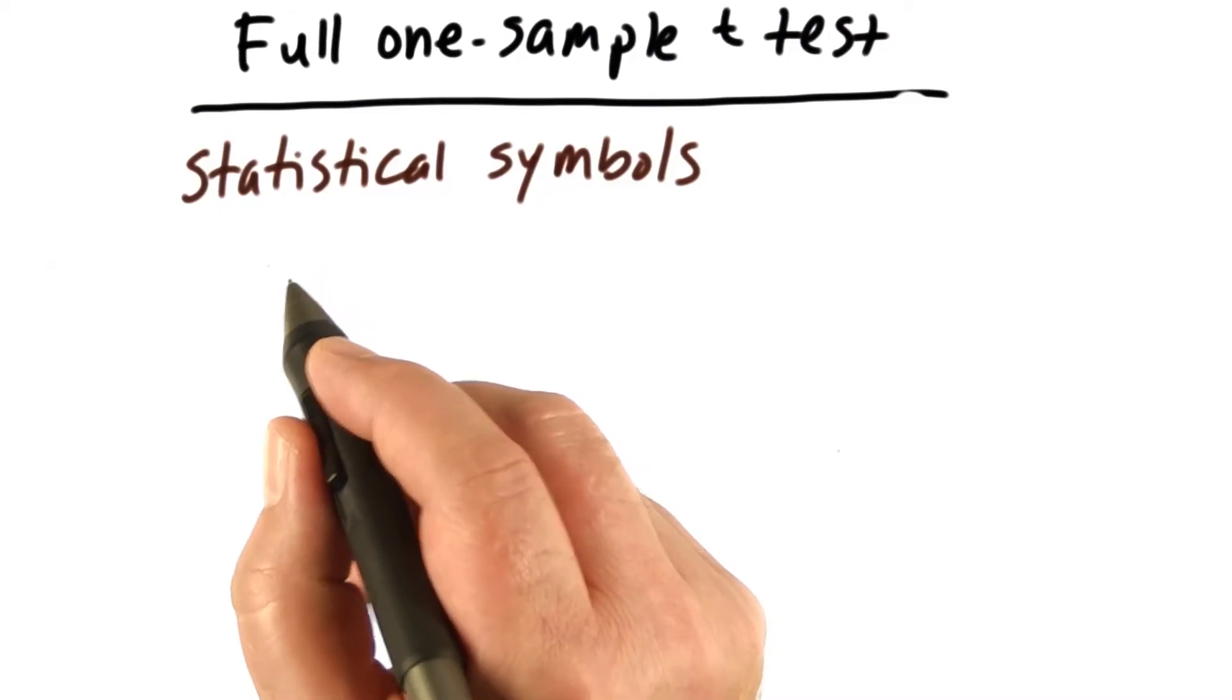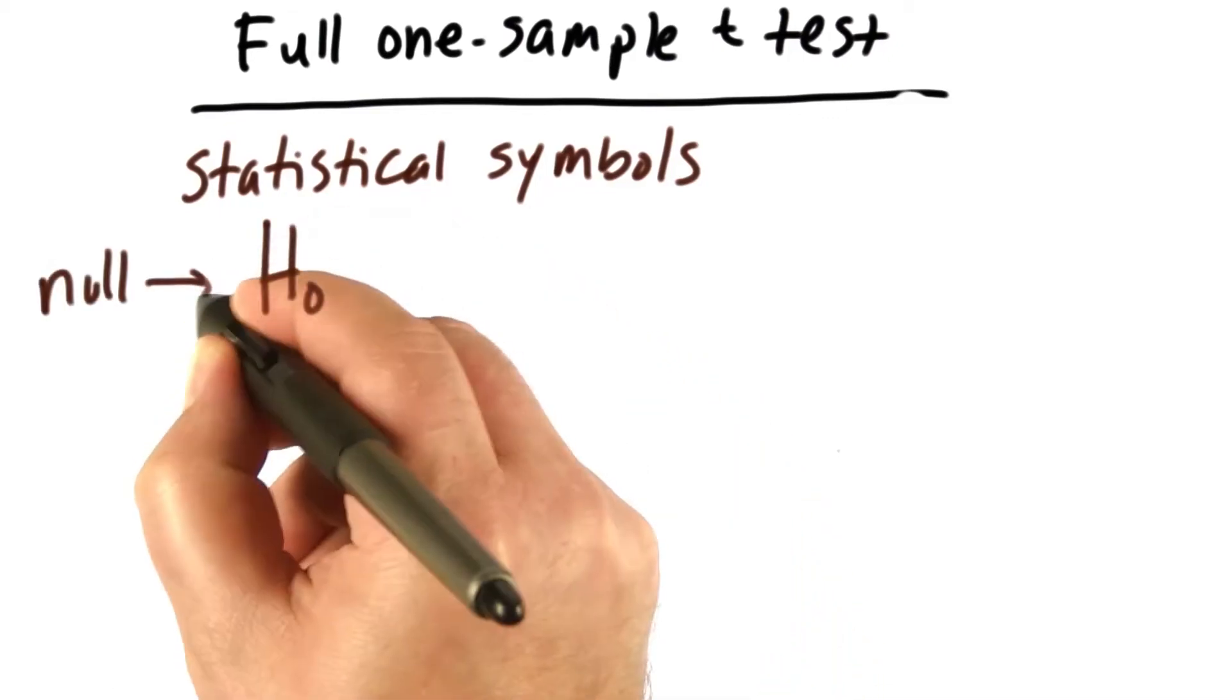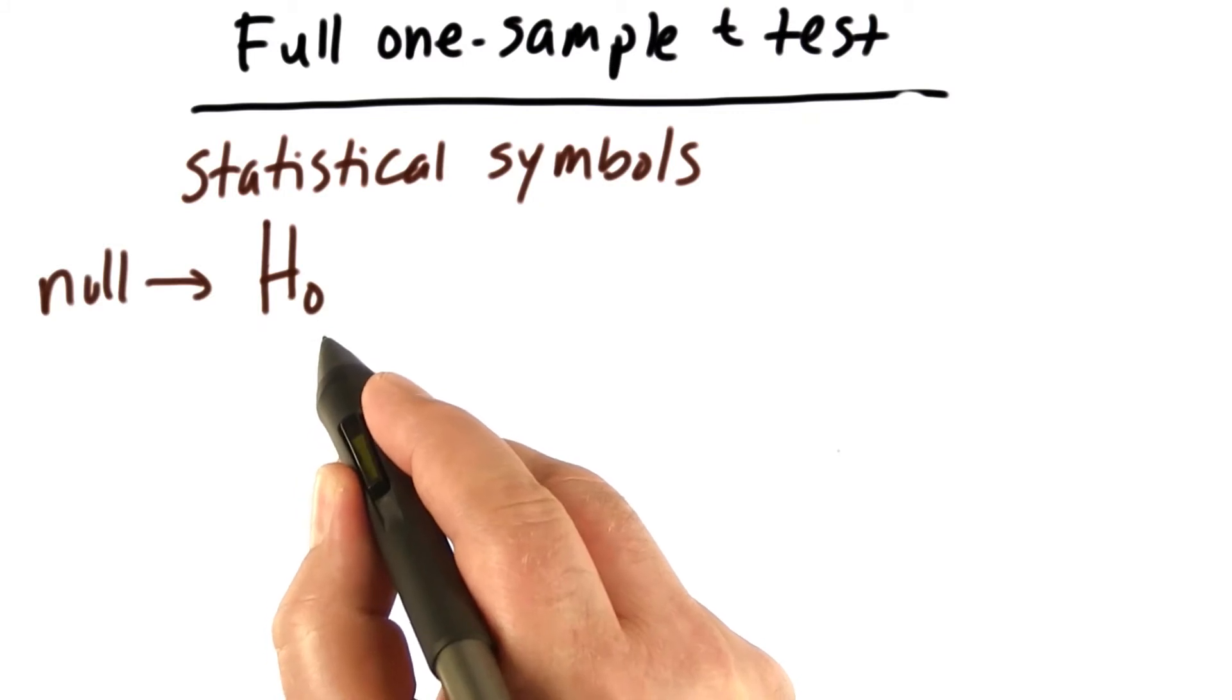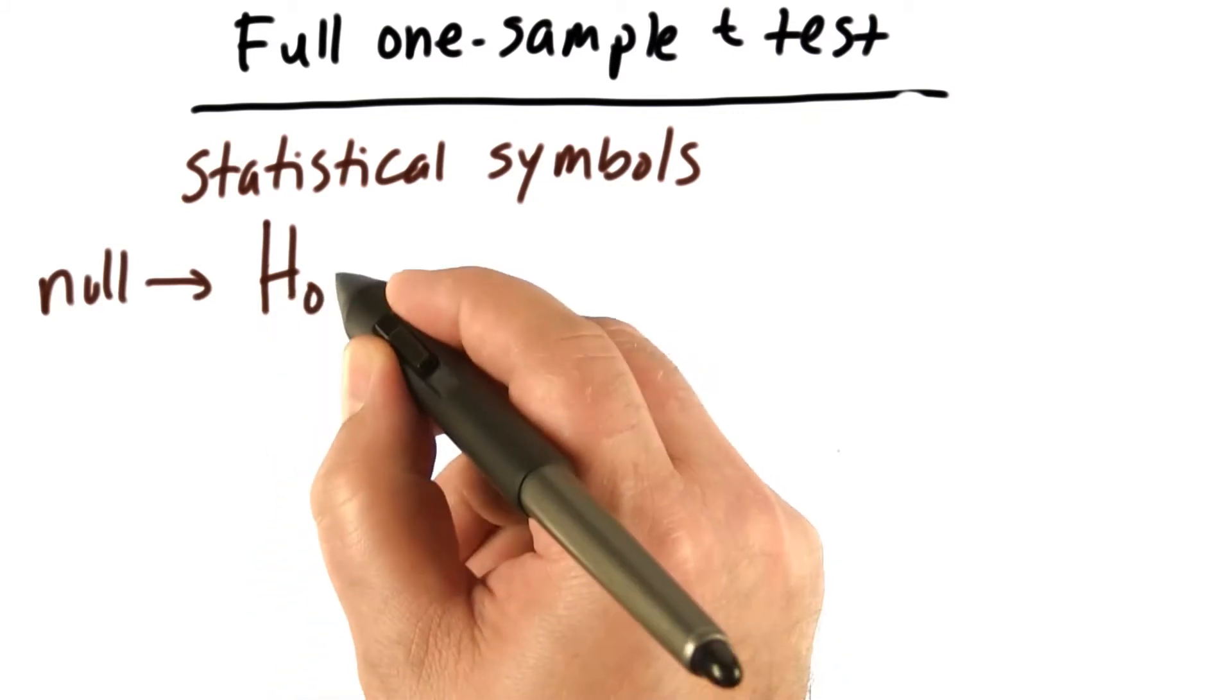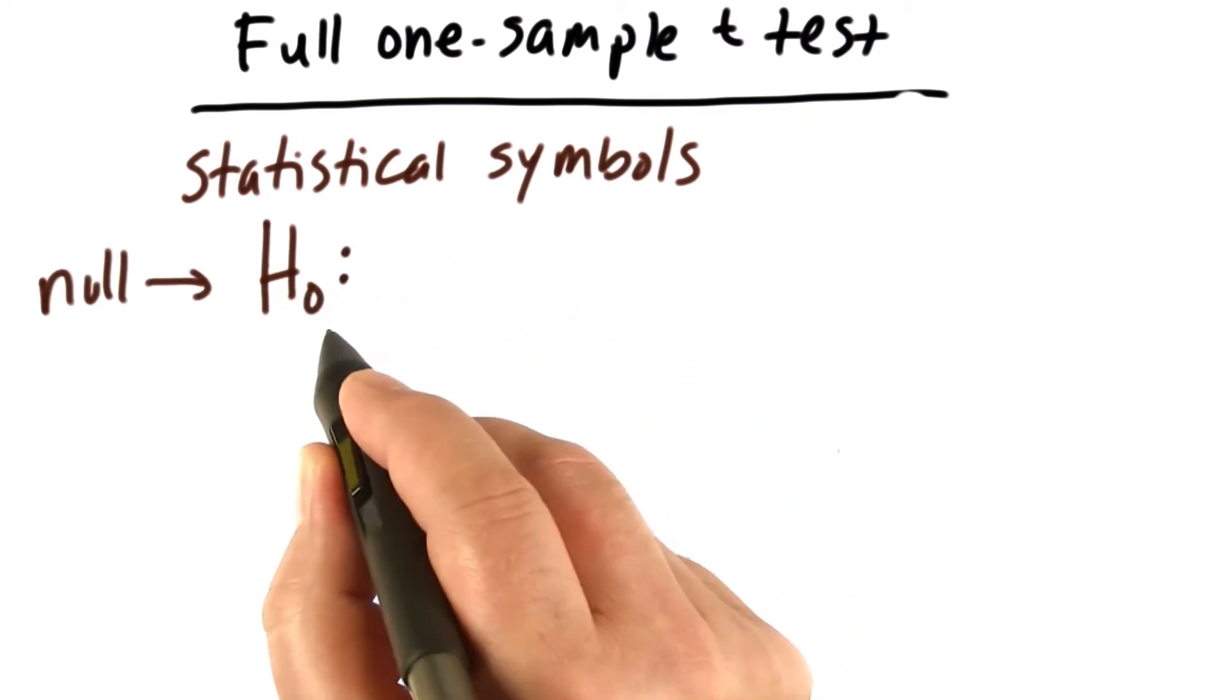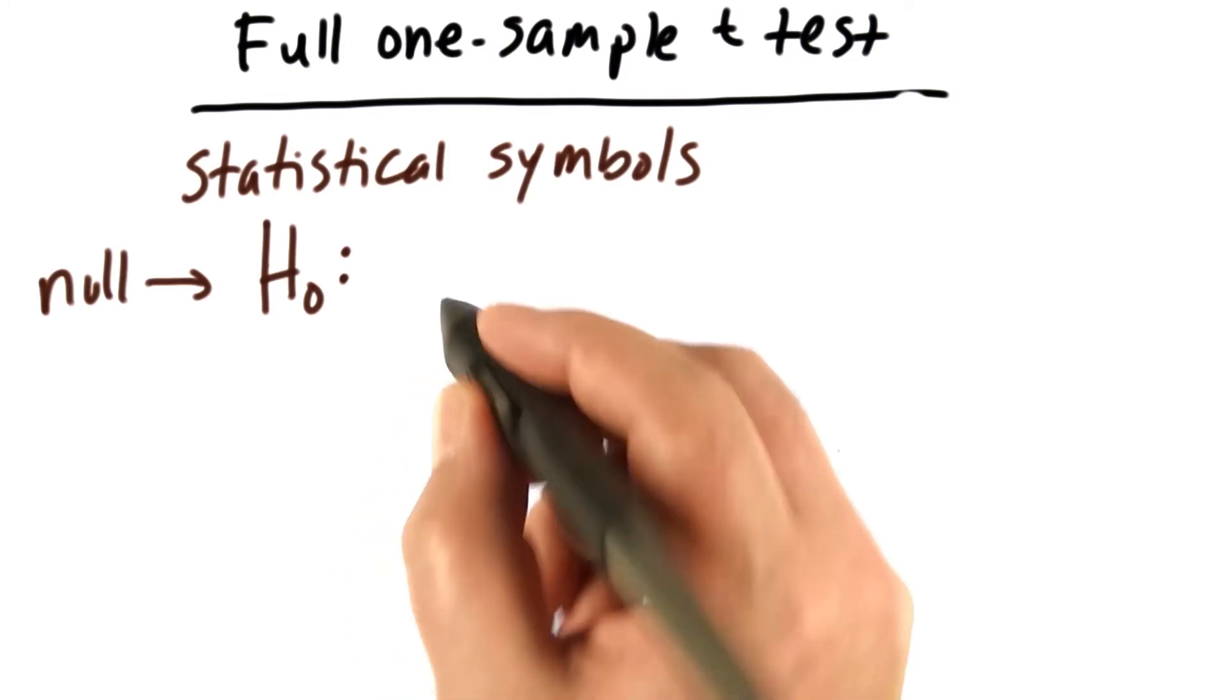Let's write the null and alternative hypothesis in statistical symbols. For the null, we use capital H with a subscript 0 to indicate the null hypothesis. We put a colon to show that what comes after is the null hypothesis.